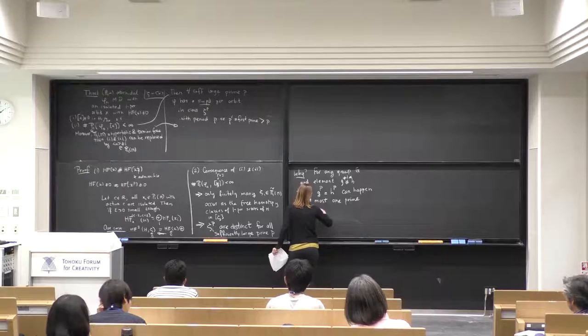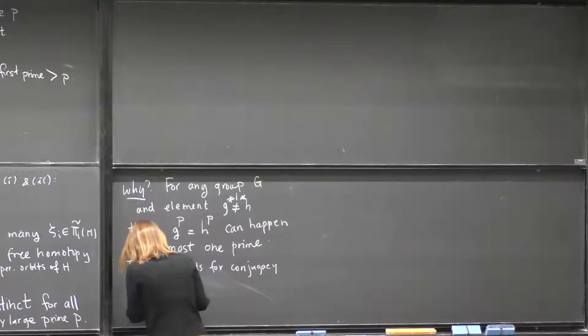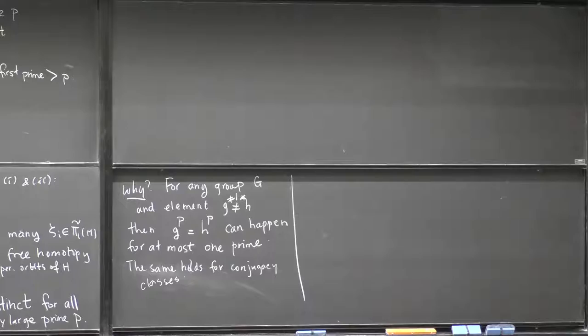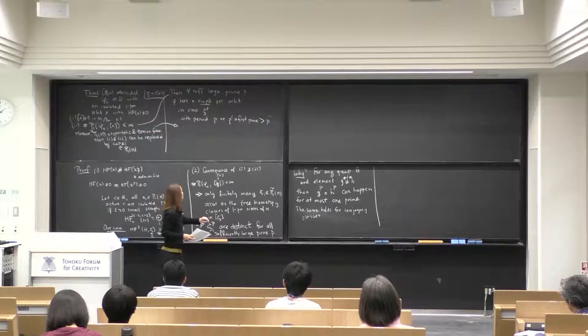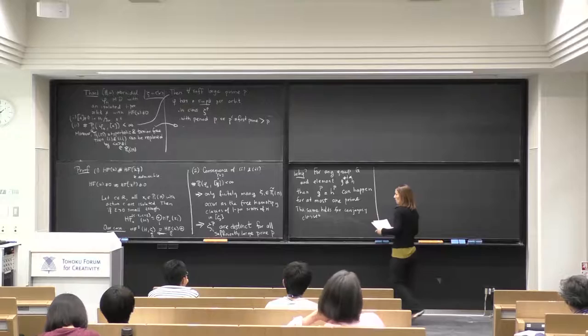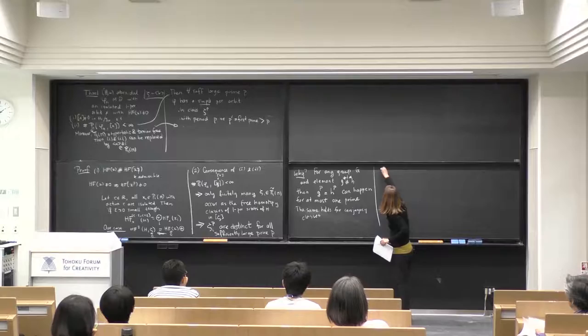Since we have only finitely many elements, all we need to do is take a large prime so that the large prime powers are all distinct from each other. From now on, assume all our primes are large enough so that both (i) and (ii) hold, along with the admissibility condition.